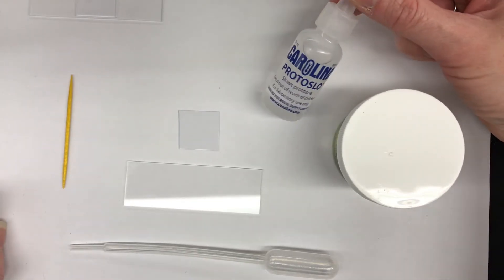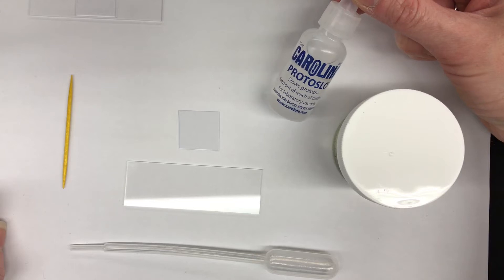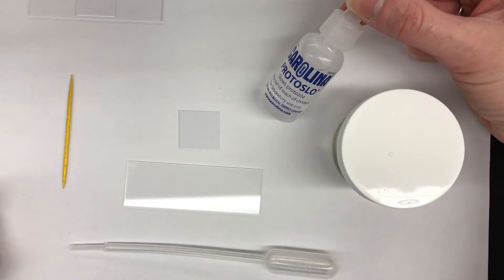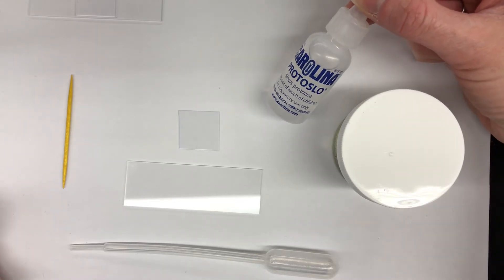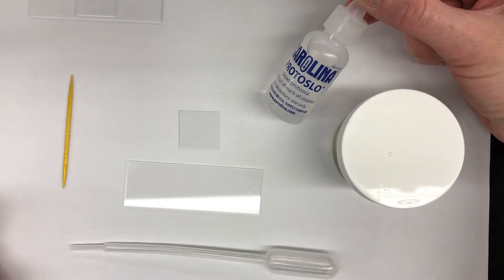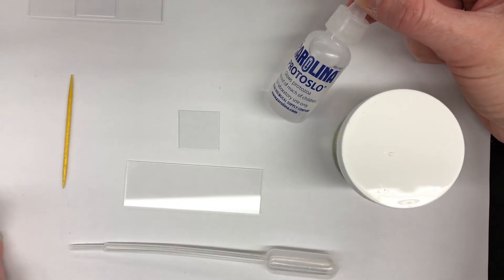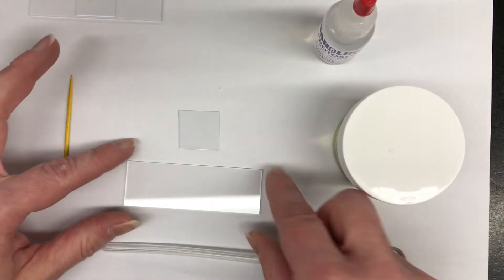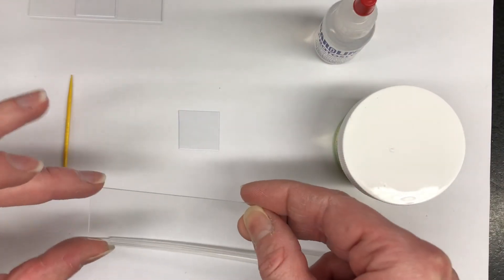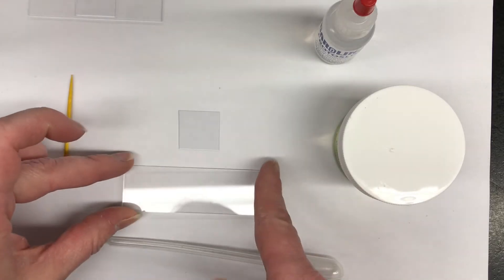What protosloe does is it slows down the movement of the protists because they move very quickly. We will use the protosloe with both the euglena and the paramecium. So the first thing we do is check to make sure that our slide and our cover slip are nice and clean.